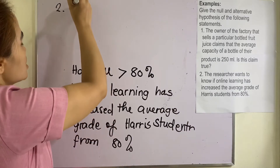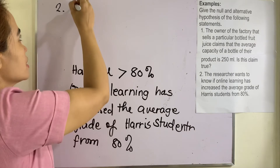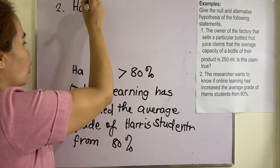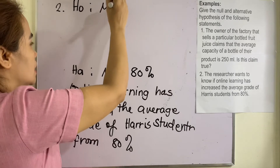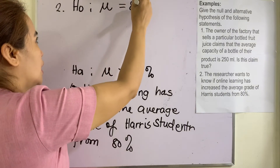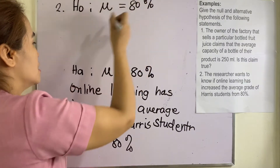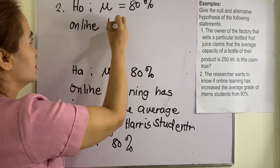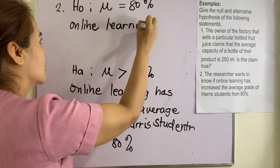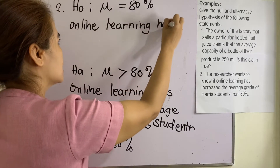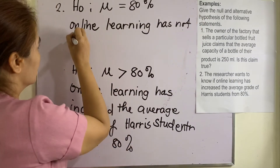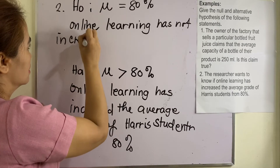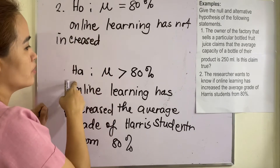So how are we going to formulate the null hypothesis? The null hypothesis, H-sub-0, is mu equal to 80 percent. In words, we can say that online learning has not increased the average grade of students — it is just the opposite of the alternative hypothesis.